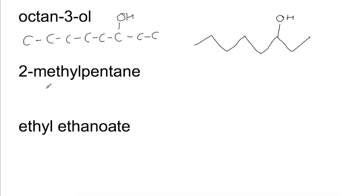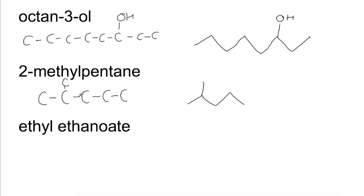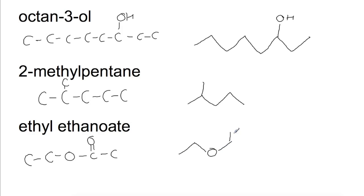You can do the same for 2-methylpentane: draw out the chain of five carbons first, and on the second one you've got a methyl group — just a single carbon branch. So you have carbons one, two, three, four, five, and then on the second one you just have a branch, and because it's a CH3 branch you don't need to draw anything further. For ethyl ethanoate we'll have two carbons, then an oxygen, then we're joined to a carbon with a double bond O, which itself has two carbons in that chain. So we have a carbon to a carbon, then that carbon is joined to the oxygen, up to the next carbon with the double bond to the oxygen, and then to the final carbon.